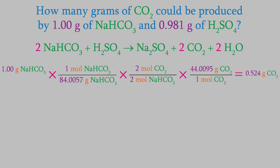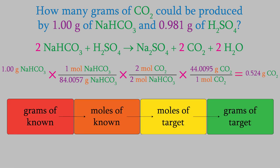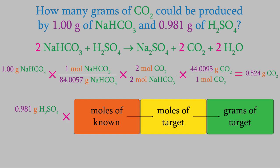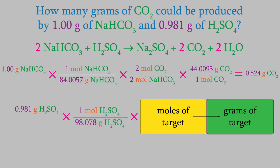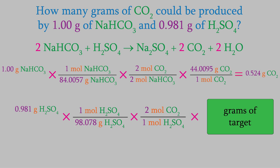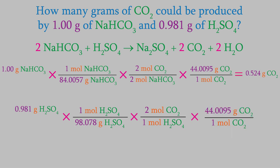Now let's run that calculation again, this time starting with the sulfuric acid. We start with the mass of sulfuric acid we're given, 0.981 grams. In step one, we convert that to moles of sulfuric acid, using masses from the periodic table — be sure to set it up so that the units cancel out. Next, we convert from moles of sulfuric acid to moles of CO2, using the coefficients from the balanced reaction. There's one mole of H2SO4 for every two moles of CO2. We want the moles of sulfuric acid to drop out, so the one goes in the denominator. Finally, we convert from moles of CO2 to grams, and we get an answer of 0.880 grams of CO2.